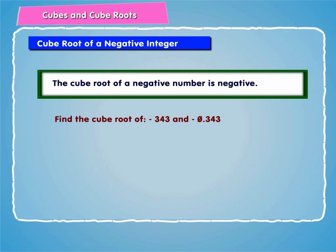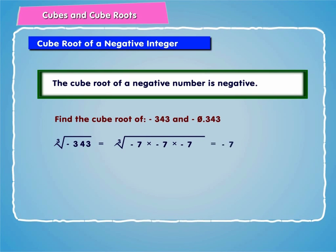Let's take an example and try to find the cube root of minus 343 and minus 0.343. After finding the cube root of 343, we put a minus sign before it. Therefore, the cube root of minus 343 is equal to the cube root of minus 7 into minus 7 into minus 7, which is equal to minus 7.